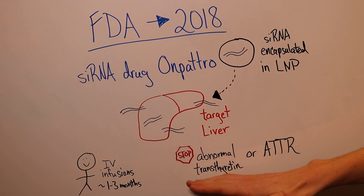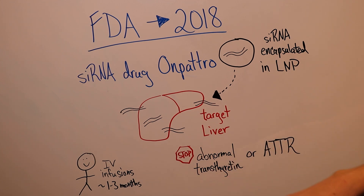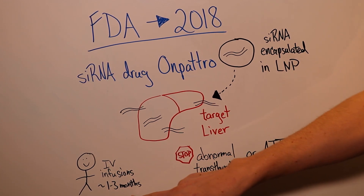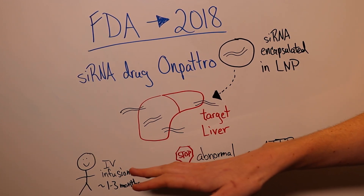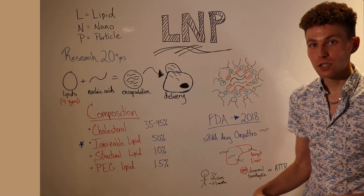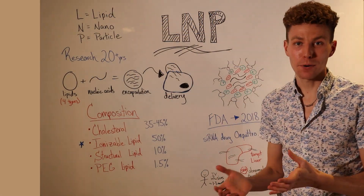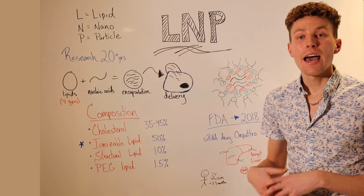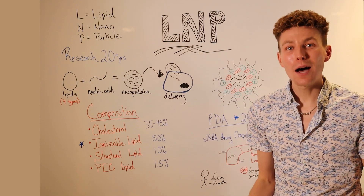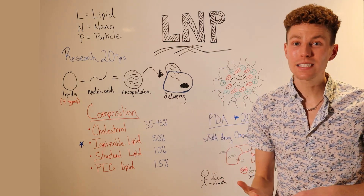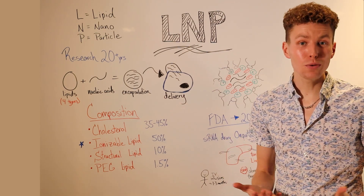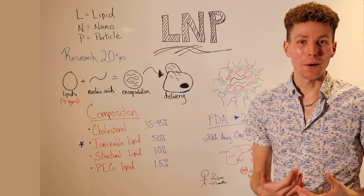ATTR affects around 50,000 people in the world and the life expectancy is less than four years. But individuals who are able to receive Onpatro get an IV infusion around every one to three months to help prevent this abnormal protein from being made — essentially stopping that protein, rescuing the effect, and allowing those patients to live much longer. So LNPs are a hot topic right now, but they've really been in research for the past several decades, have been approved in other drugs in the past, and are only going to continue to improve to deliver better drugs to our bodies.